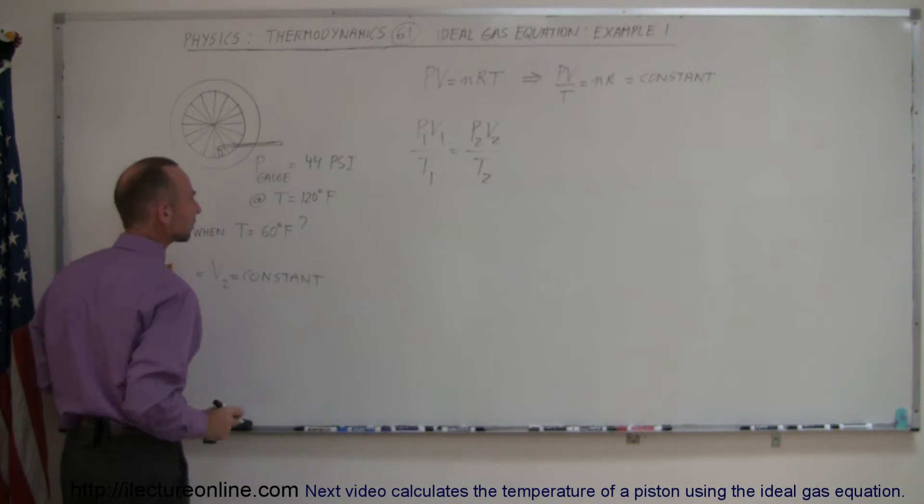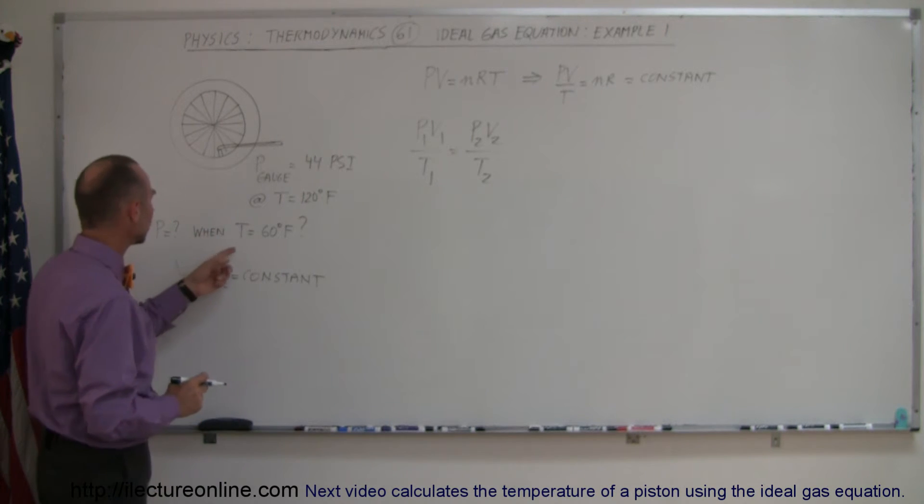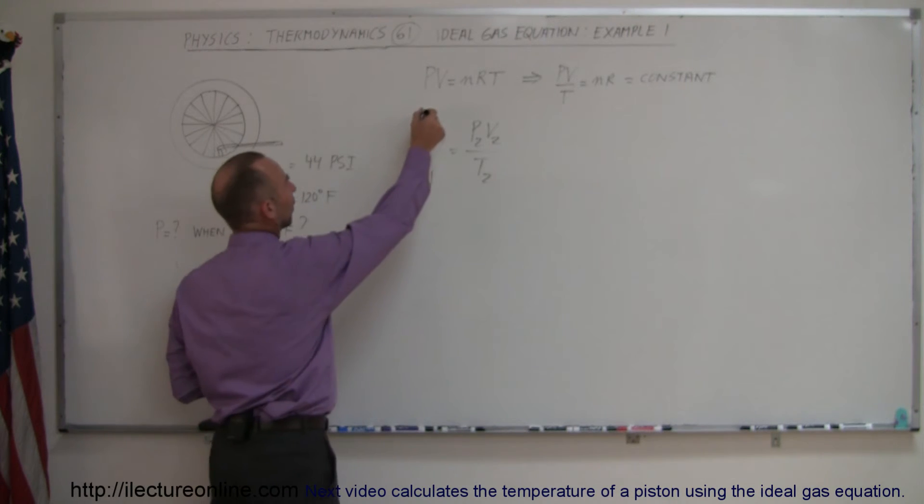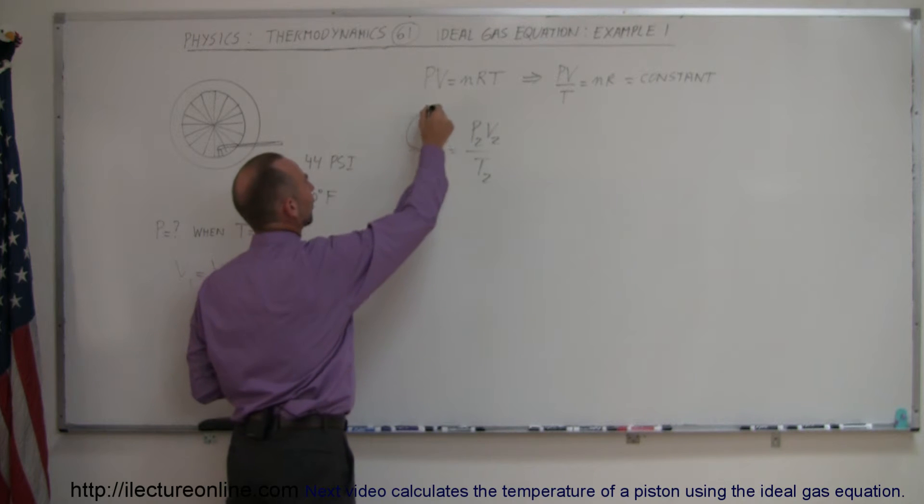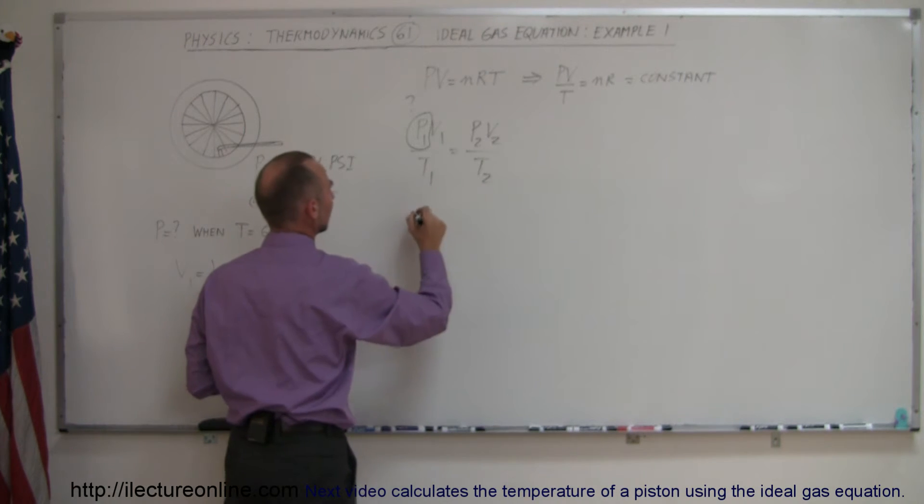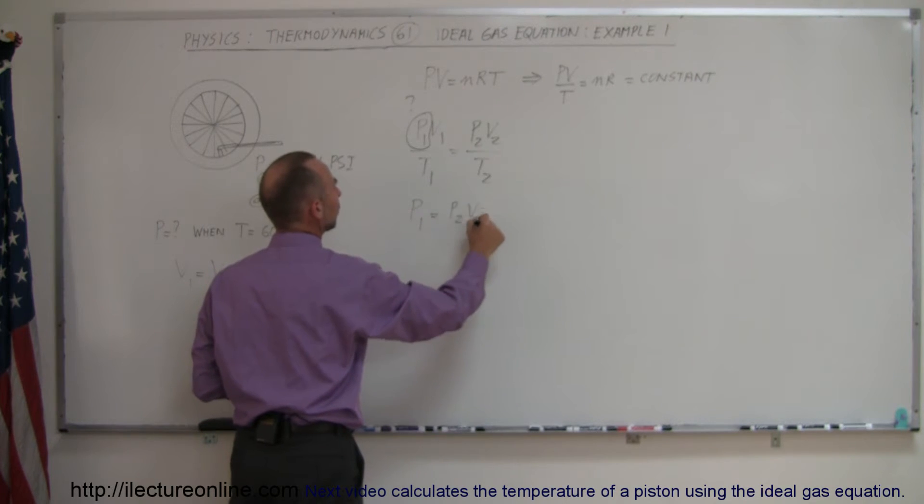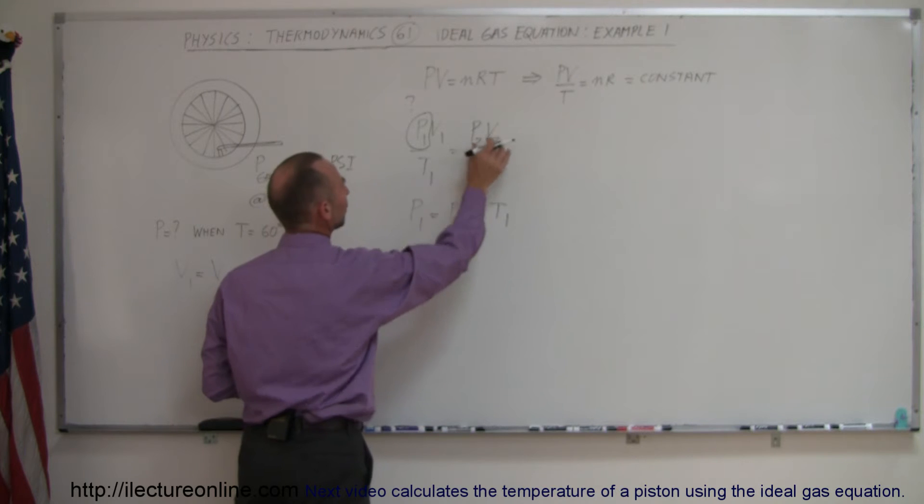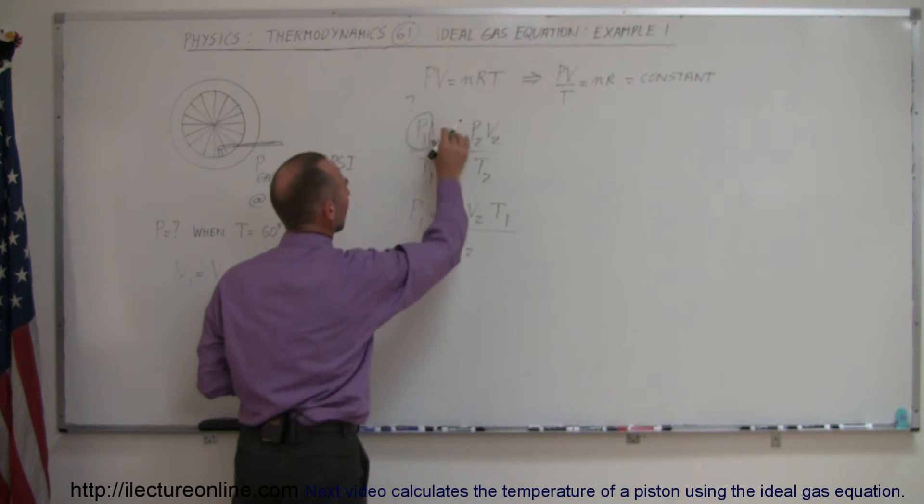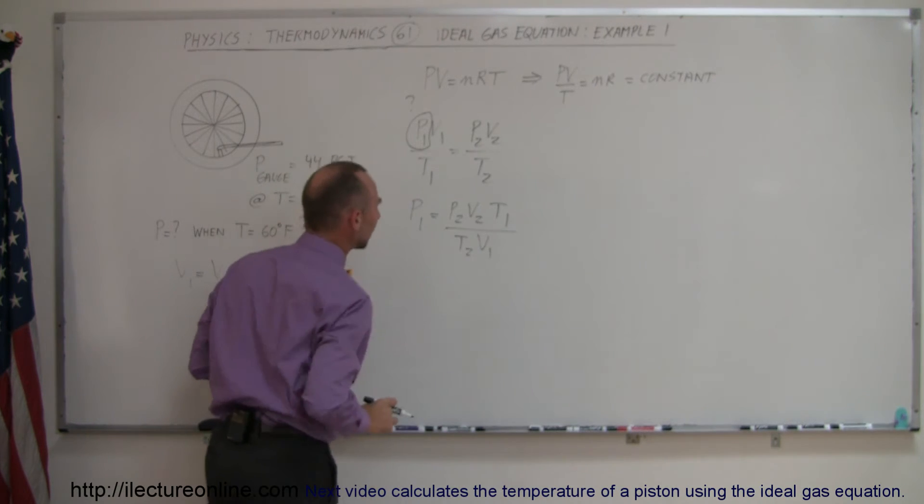So what we want to know is the initial pressure when the temperature is 60 degrees. We want to figure out what this is equal to. So that's what we're looking for. We say that P1 is equal to P2 V2 times T1, we move T1 over here, divided by T2 times V1 when we bring V1 down here.